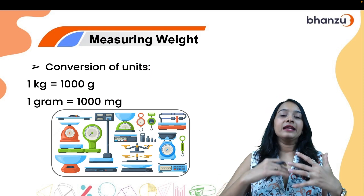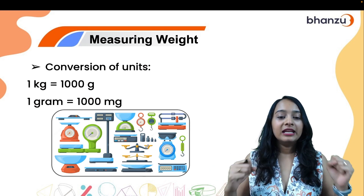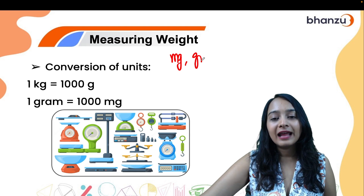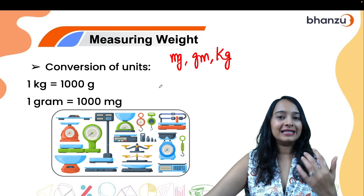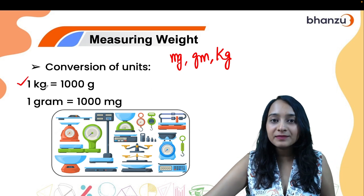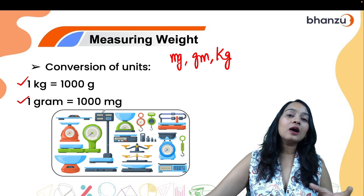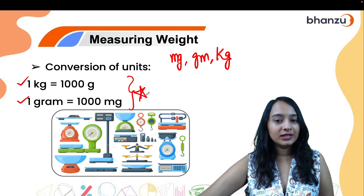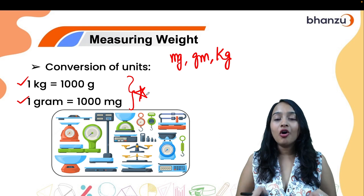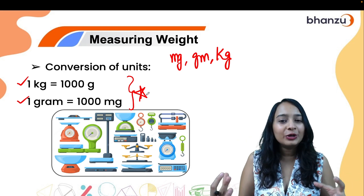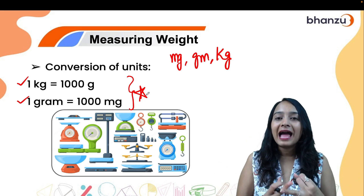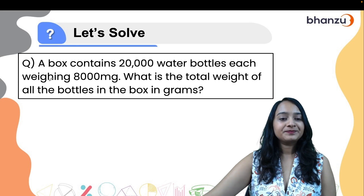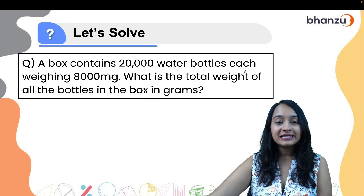Next is measuring weight, which can be done in milligrams, grams, and kilograms. Gram is usually written as 'g'. One kg is 1000 grams and one gram is 1000 milligrams. Please make sure you remember these unit conversions. Let's solve a question: a box contains 20,000 water bottles, each weighing 8000 milligrams.